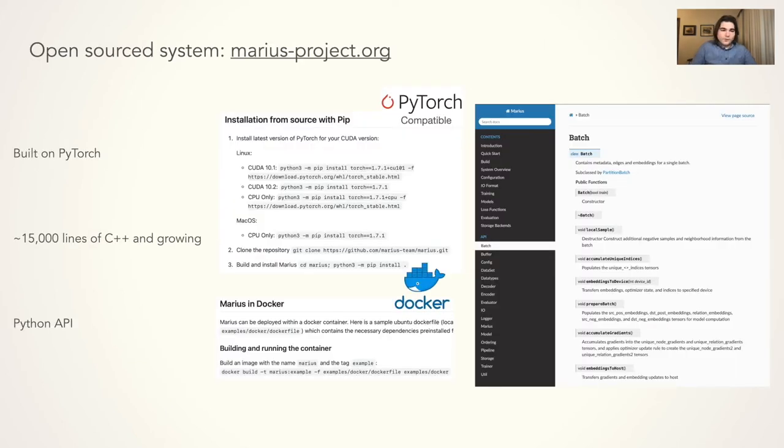MARIUS is an open source project released at mariusproject.org under the Apache 2.0 license. It is built upon PyTorch and can be run within Docker containers for easier deployment. It's written in about 15,000 lines of C++ and comes with a Python API for ease of use with support for custom models, loss functions, and datasets.